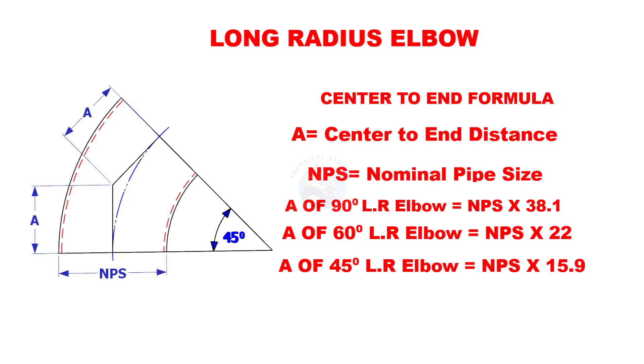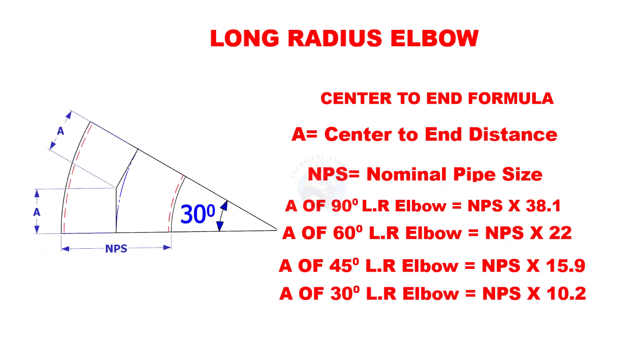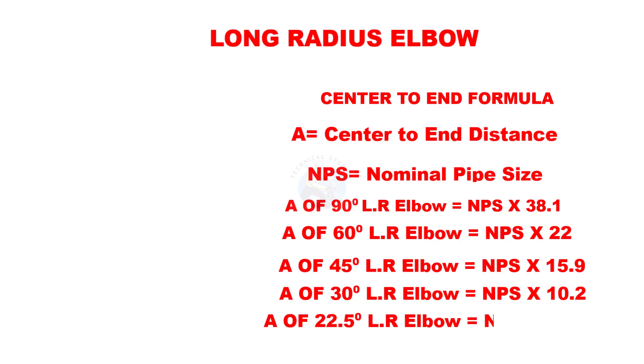A of 45 degree long radius elbow is nominal pipe size multiplied by 15.9. A of 30 degree long radius elbow is nominal pipe size multiplied by 10.2. If the degree is 22.5, multiply the nominal size by 7.57.